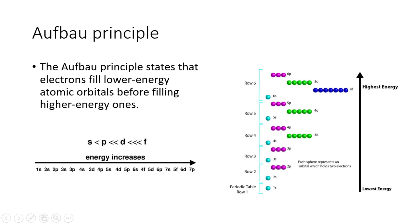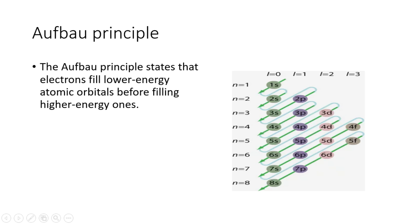Second, the Aufbau principle, which states that electrons fill lower energy atomic orbitals before filling higher energy ones. Which means that first 1s orbital is filled with two electrons before filling the 2s orbital and so on. This figure shows the order of orbitals from low to high energy.